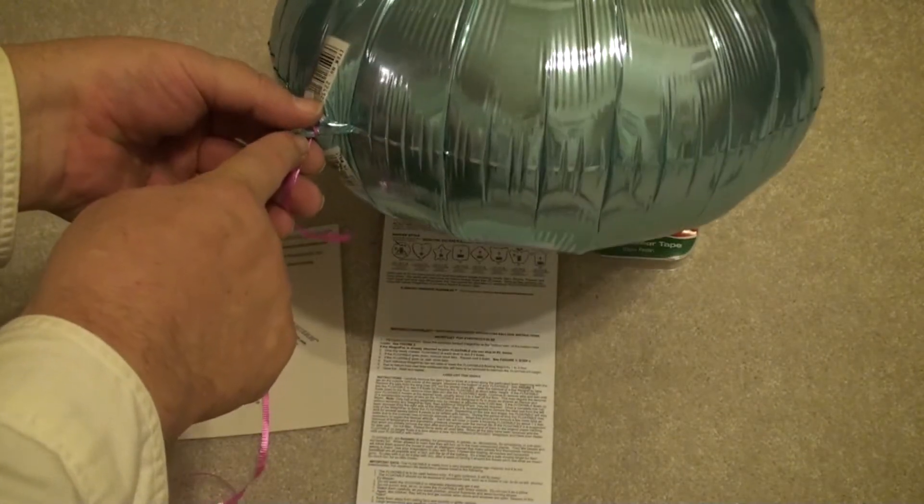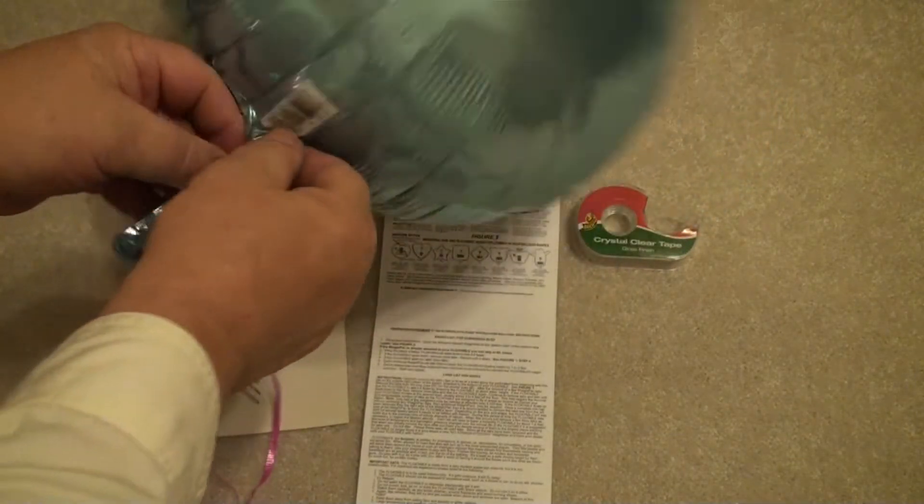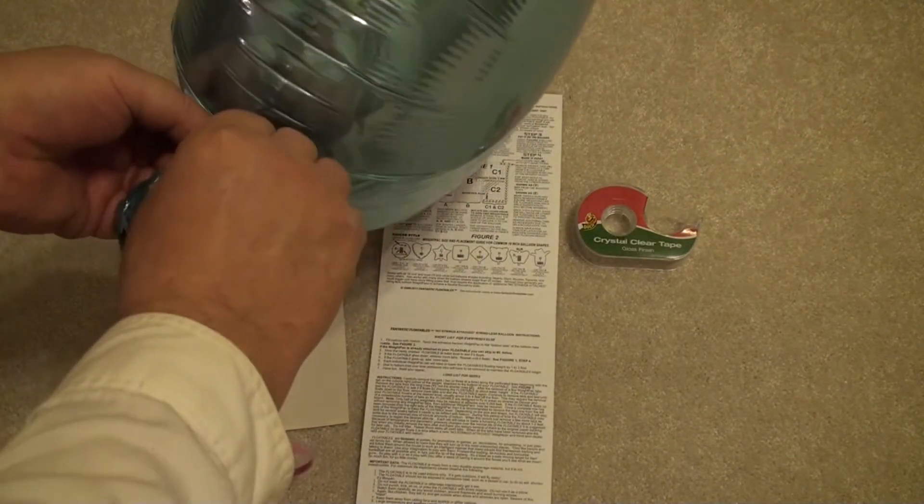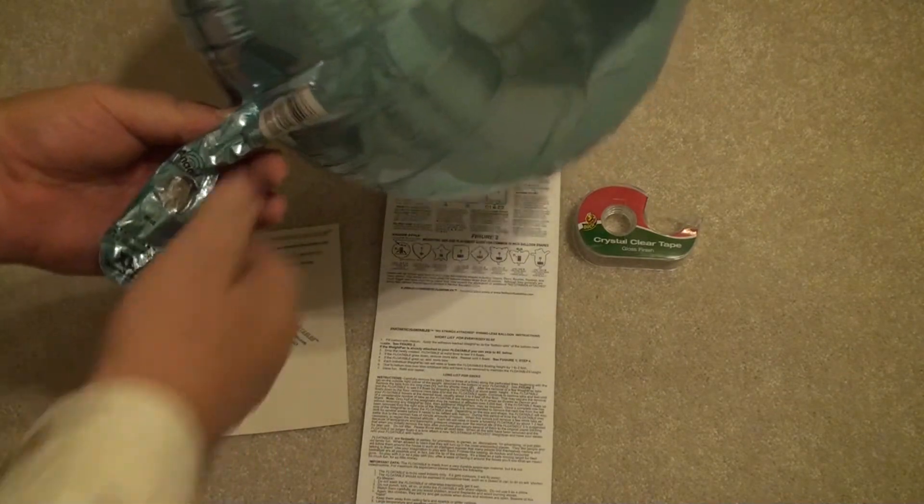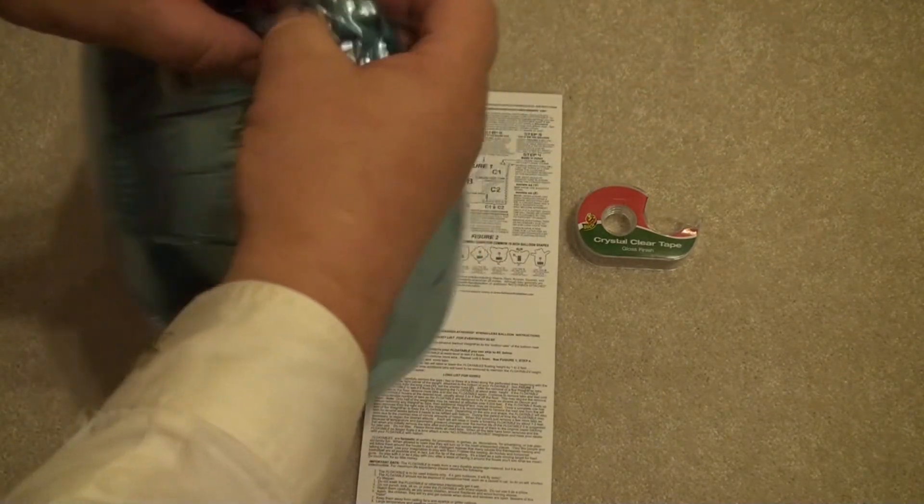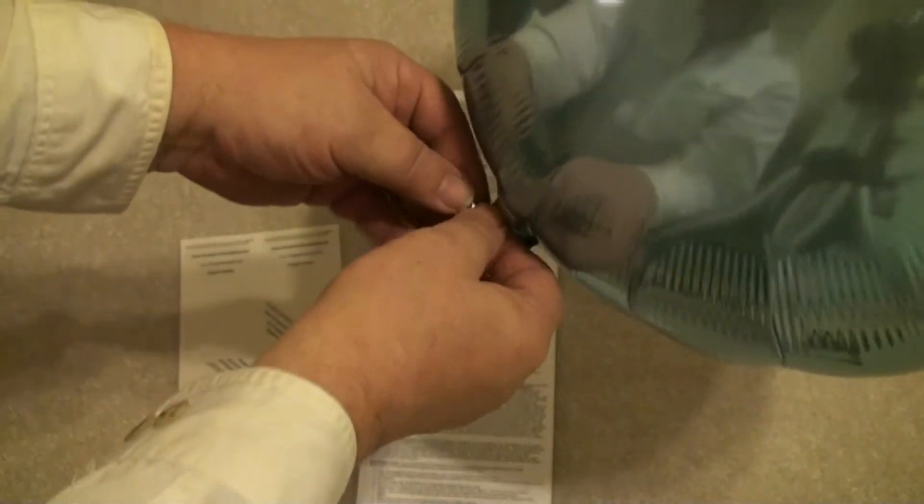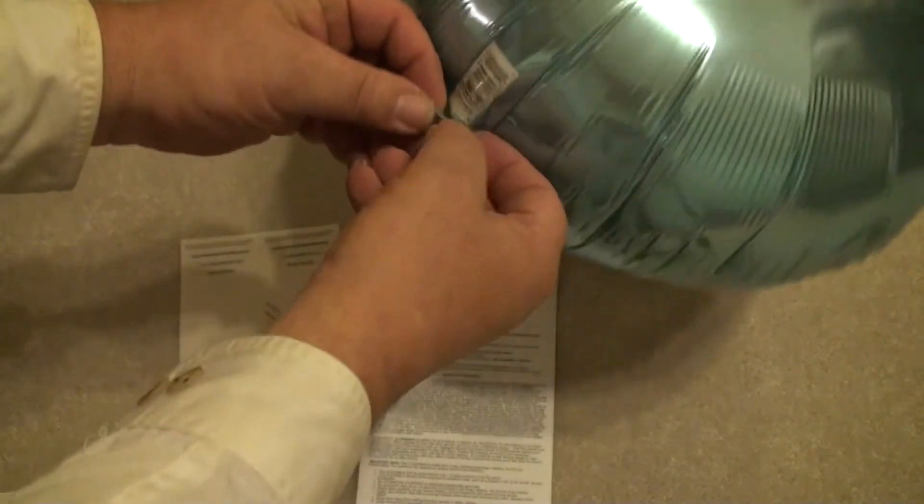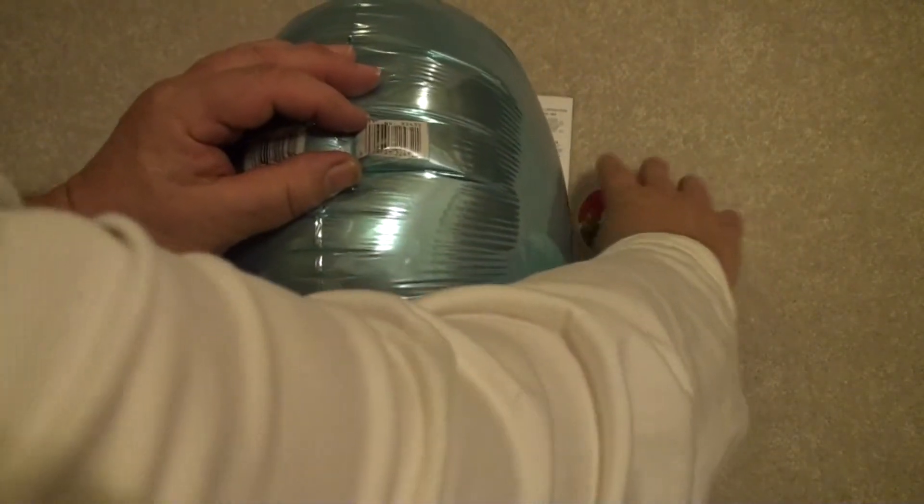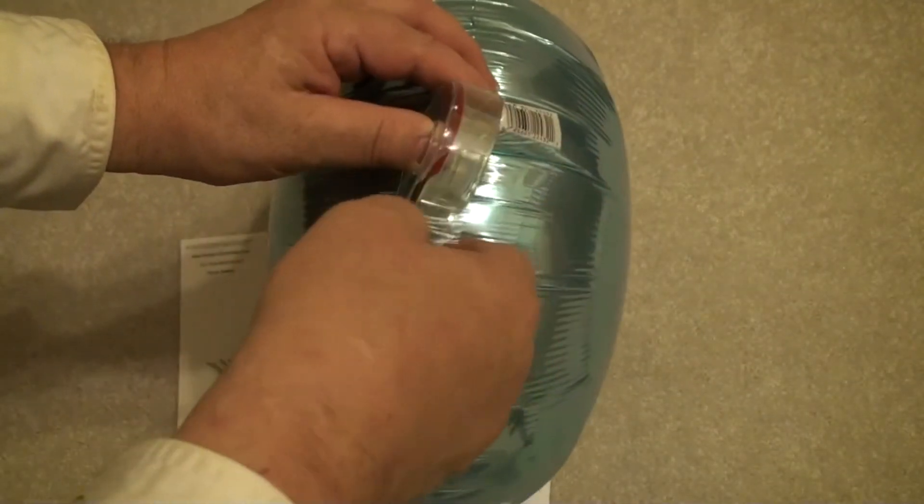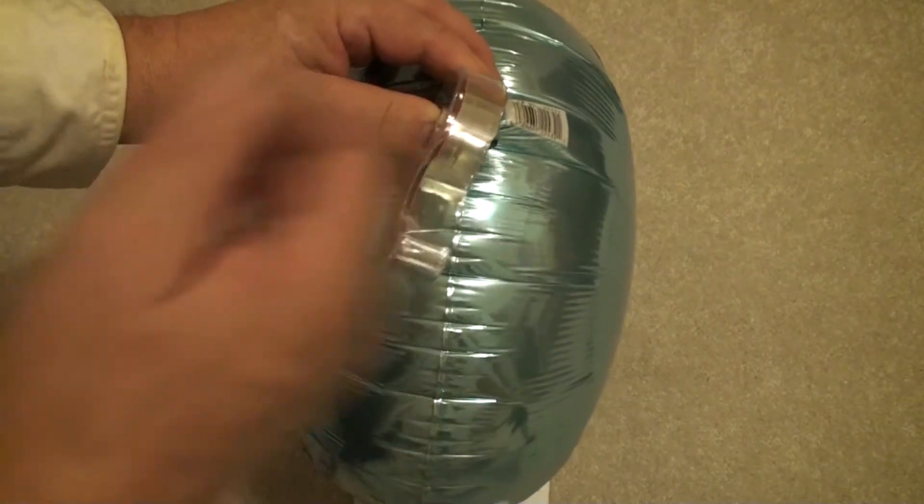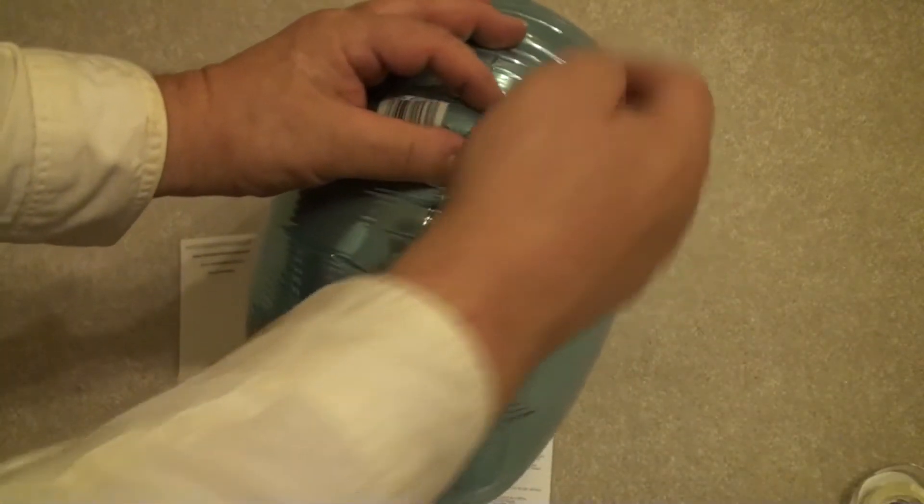When you get your balloon inflated, bring it home and remove the string. Oftentimes we'll take our balloons and bring them in garbage bags so we don't have to have a string put on them. Just remove the string, roll up the nozzle, and tape it to the side of the balloon with cellophane tape. This keeps the nozzle out of the way and makes the toy work properly.